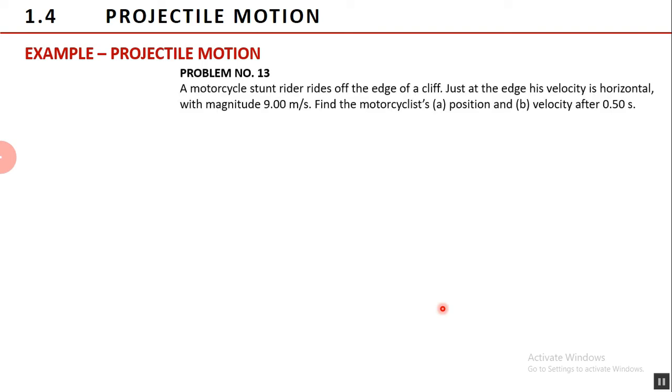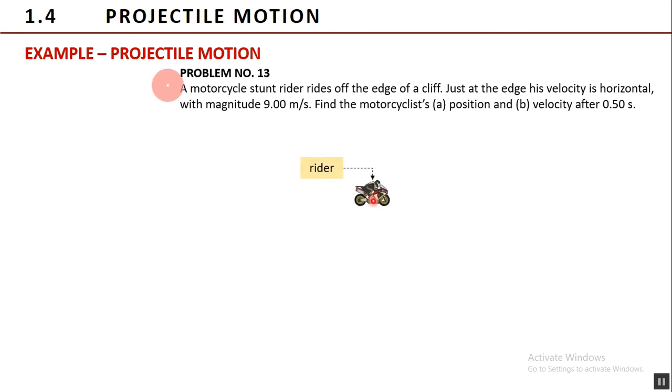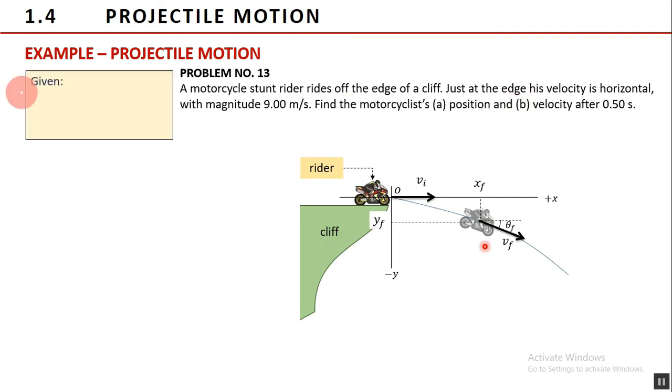Problem number 13: A motorcycle stunt rider rides off the edge of a cliff. Just at the edge his velocity is horizontal, with magnitude 9 meters per second. Find the motorcyclist's, letter A, position and letter B, velocity after 0.5 second. So list the given information. The initial velocity of the rider v sub i is 9 meters per second. Since the rider is a type 2 projectile, so his initial angle of flight is 0. We have also given time 0.5 seconds.